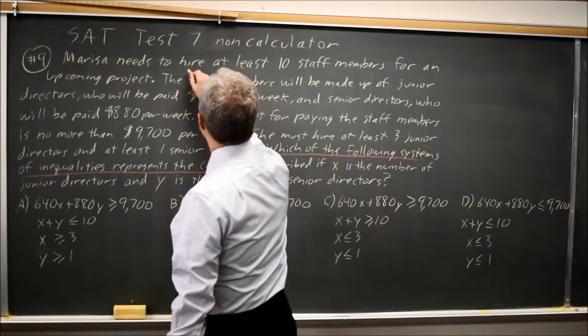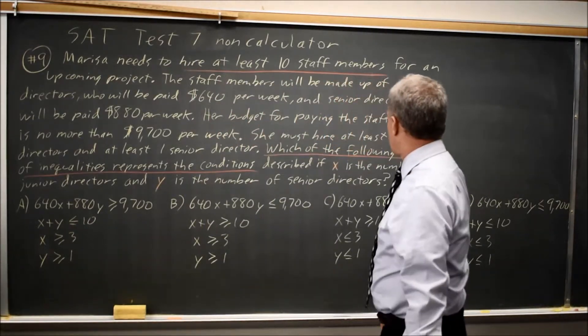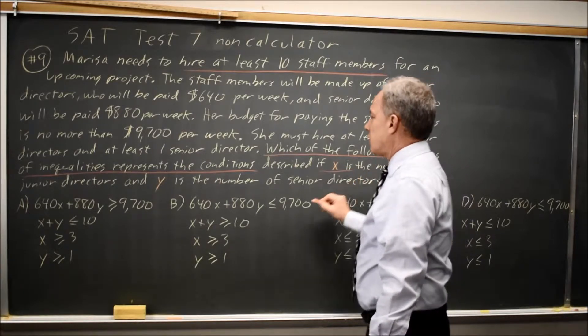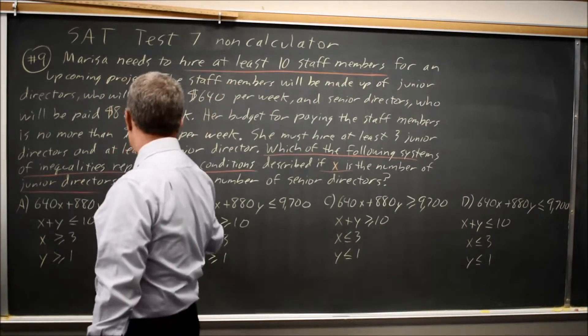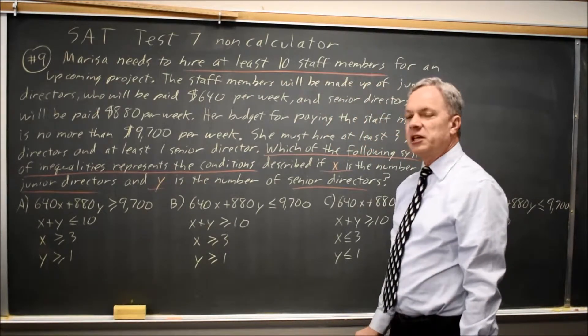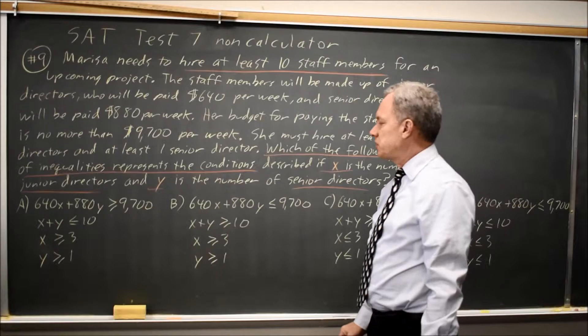Marissa needs to hire at least 10 staff members, where X is the number of junior directors, and Y is the number of senior directors. So X plus Y must be at least 10. That's greater than or equal to 10.